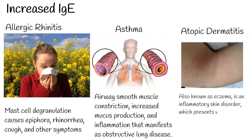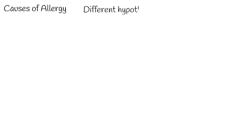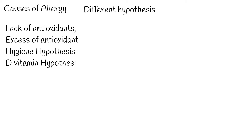There are several hypotheses why allergic diseases have increased over the last several decades; these hypotheses are commonly controversial and not definitive. For example, one hypothesis suggests that lack of antioxidants can cause allergic diseases, while another suggests excessive antioxidants can. Other hypotheses include the hygiene theory — the more hygienic the environment, the higher the chance a child will develop allergic diseases — and that vitamin D intake in childhood can cause allergic diseases.